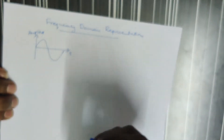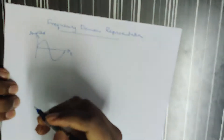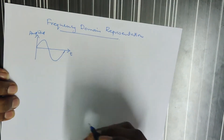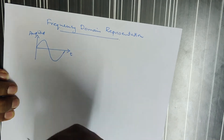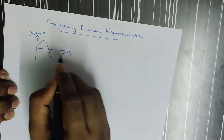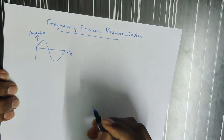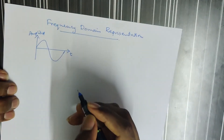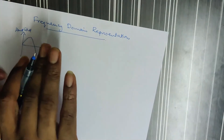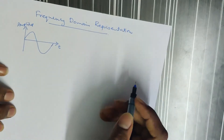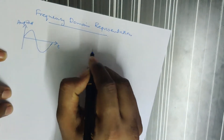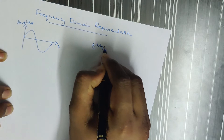We can perform all operations on signals with respect to time — we can do the analysis. Next is Frequency Domain. It is a completely different domain. In the frequency domain, the main parameter is Frequency.